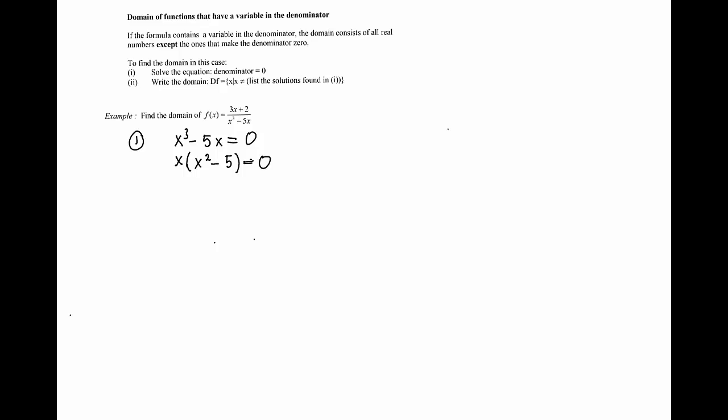The first step is to solve the equation where the denominator, x cubed minus 5x, is equal to zero. To solve that equation we need to factor it — we can factor out x and we'll have x times (x squared minus 5) equals zero. Since the product equals zero, one of the factors must be zero, so x equals zero or x squared minus 5 equals zero.